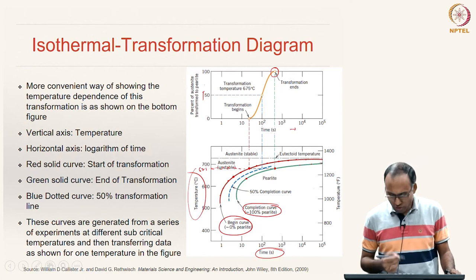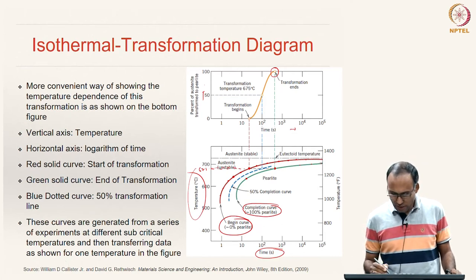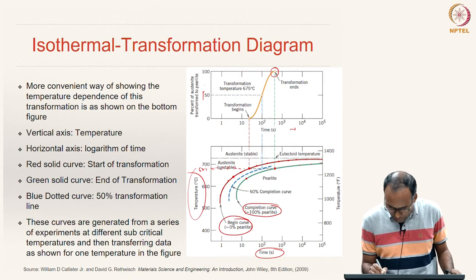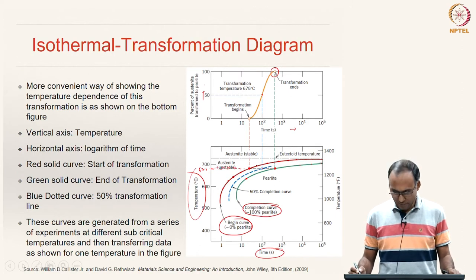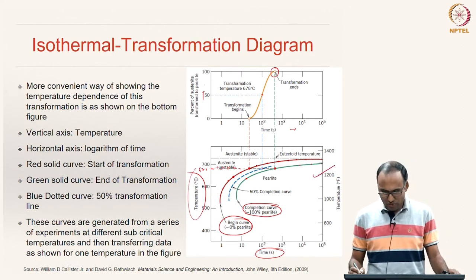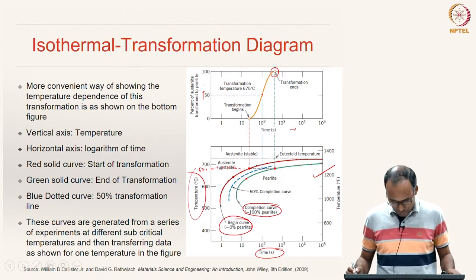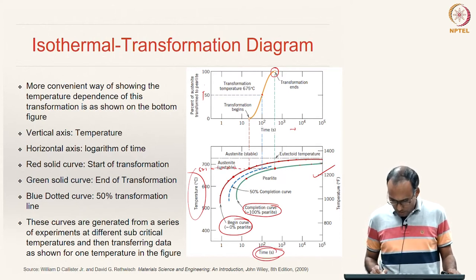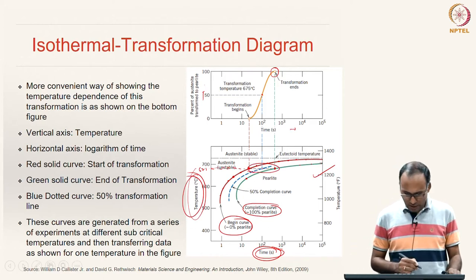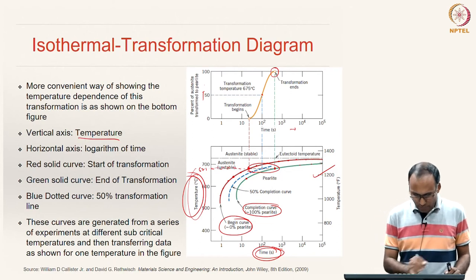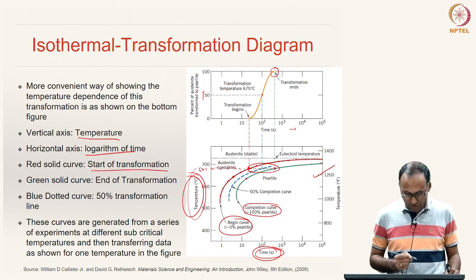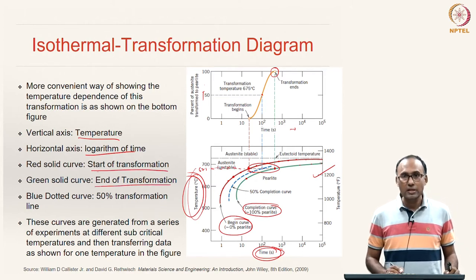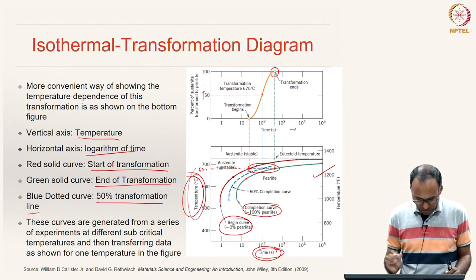At 650°C, transformation begins at an earlier stage and finishes a little earlier. Collecting all transformation-start times at different temperatures and connecting them gives the transformation-begin curve (0% pearlite). Similarly, connecting all transformation-end times gives the transformation-completion curve (100% pearlite). It is also customary to show the 50% completion line. This diagram is called the isothermal transformation diagram or time-temperature-transformation (TTT) diagram.